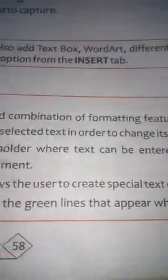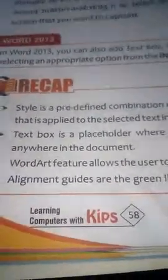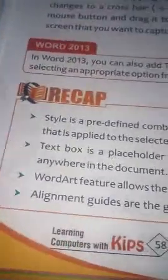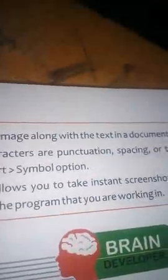A text box is a placeholder where text can be entered; it can be moved along with its contents anywhere in the document. The Word Art feature allows users to create special text effects. Alignment guides are the green lines that appear when you move an image around the text, helping you align the image along the text in the document.